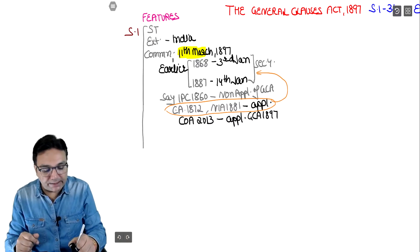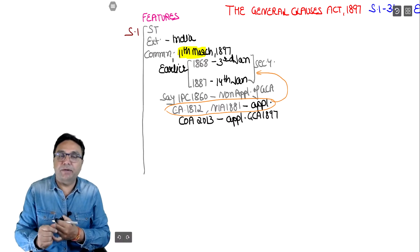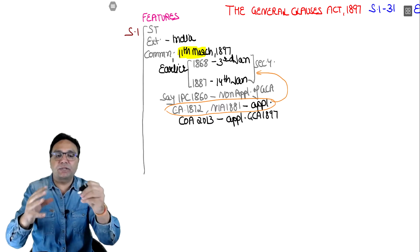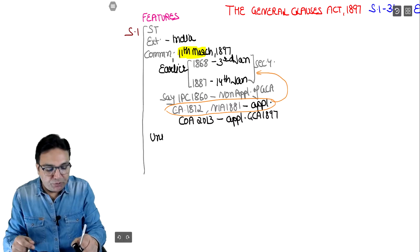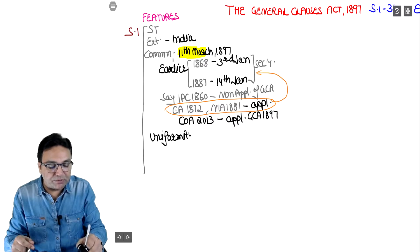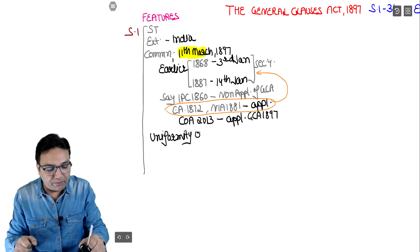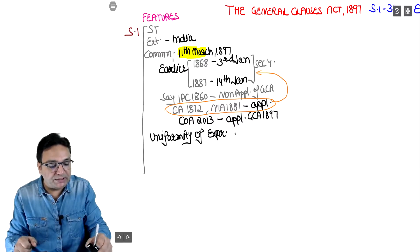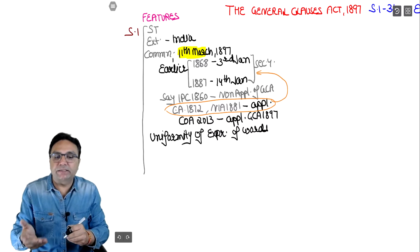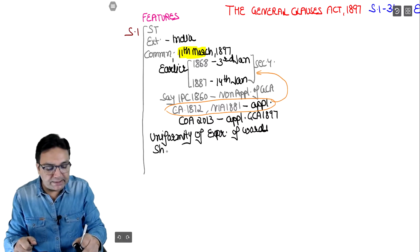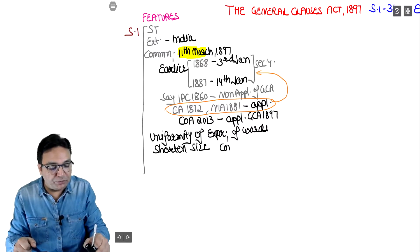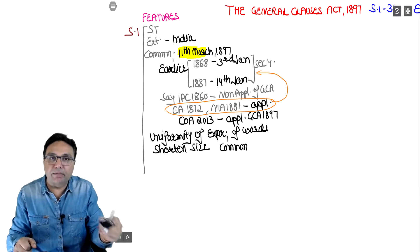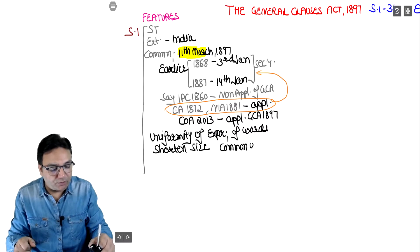So we have made GCA so that it can help other acts, and common general terms used in other acts don't need to be written repeatedly - why increase their size? So we call this uniformity - uniformity of expression of words. One word like 'ear' will have the same meaning everywhere. This also shortens other acts - we call this 'superfluity of language' - unnecessary language that can be removed. Common use words - that's why the name is the General Clauses Act.